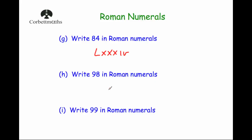Write ninety-eight in Roman numerals — ninety is ten before a hundred, so XC, and eight is VIII, giving XCVIII. And finally, write ninety-nine — ninety is XC, and nine is one before ten, so IX. Therefore ninety-nine in Roman numerals is XCIX.